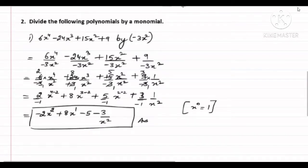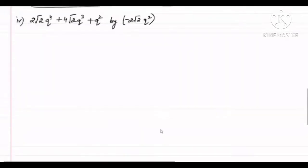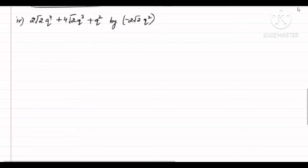x to the power 1 you can simply write as x. Now let us also look at the fourth part of this question. The polynomial given is 2√2·q⁴ plus 4√2·q³ plus q², and you have to divide it by the monomial minus 2√2·q².